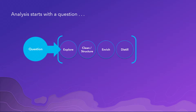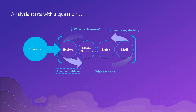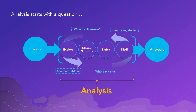So we begin to explore the data, clean and structure it, enrich it, begin distilling it, to discover that it becomes a very iterative process. All along the way, we begin to see the problem — we understand what it can answer, we find what's missing, and identify the key stories. Some folks call this data wrangling, when in fact it's really analysis as part of the data science process. Ultimately, giving us, or leading us towards, the answers that we're after.